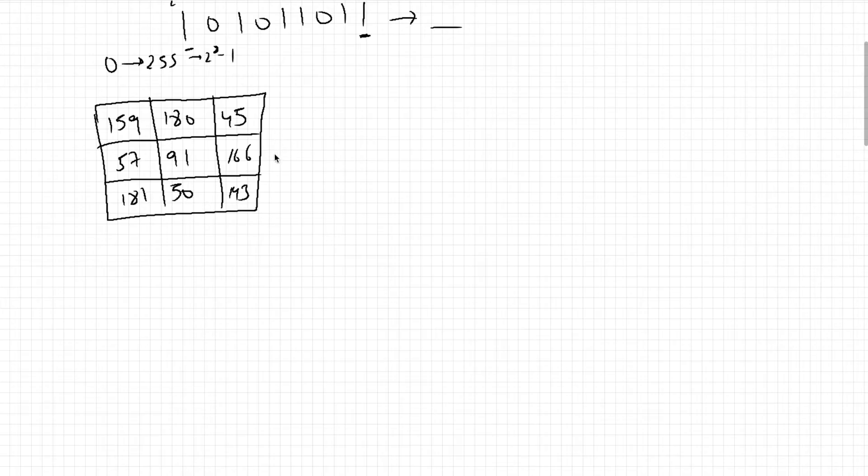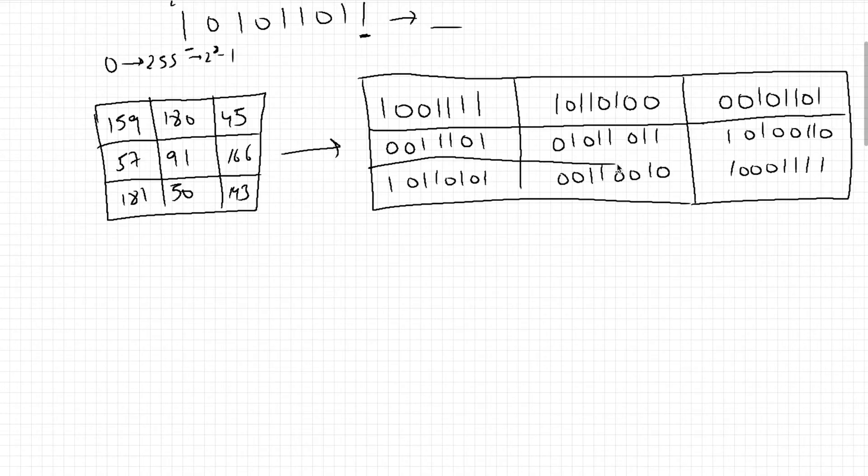The first step would be to convert this decimal representation into binary representation. For this image in decimal form, we represent it in binary form. Now we can play around with the pixels - we have the binary values, so we have more information about the image.